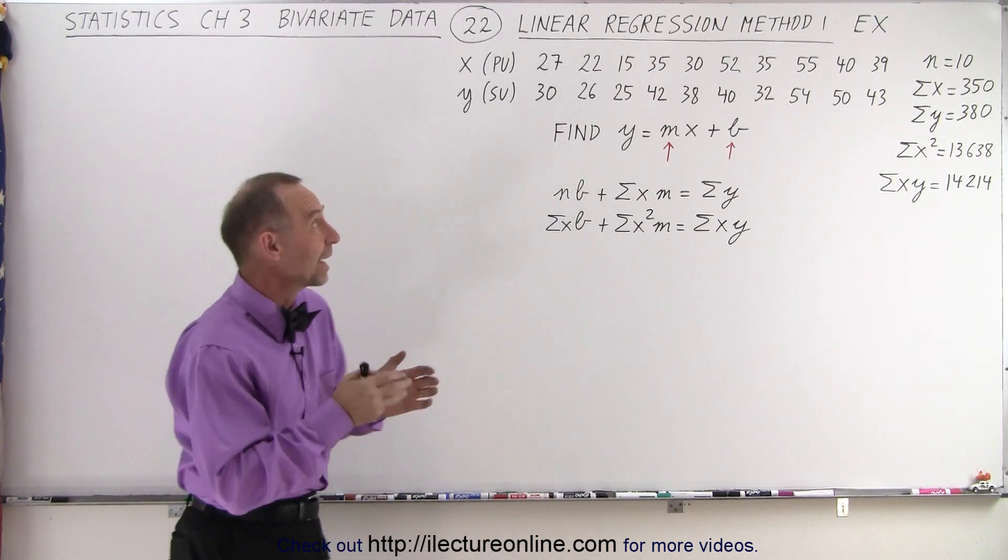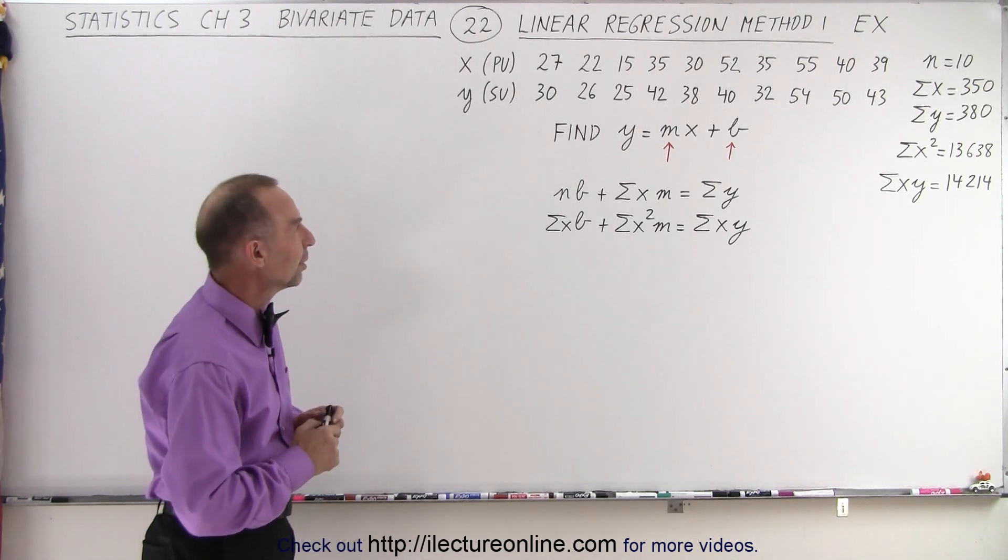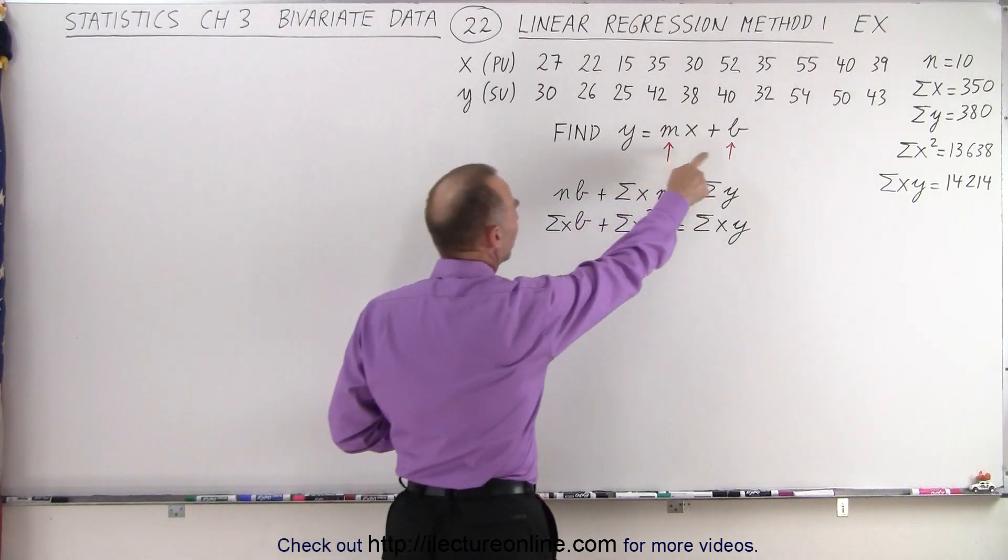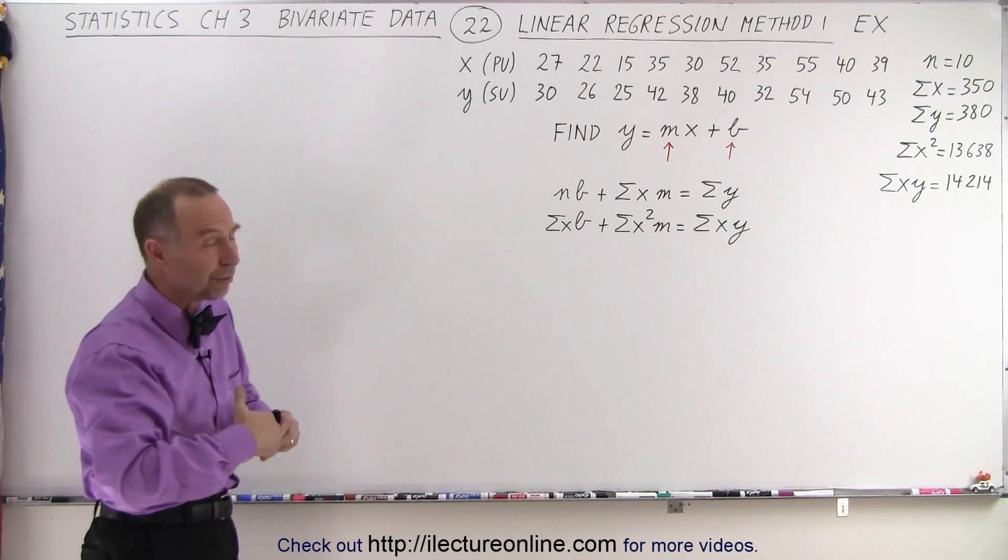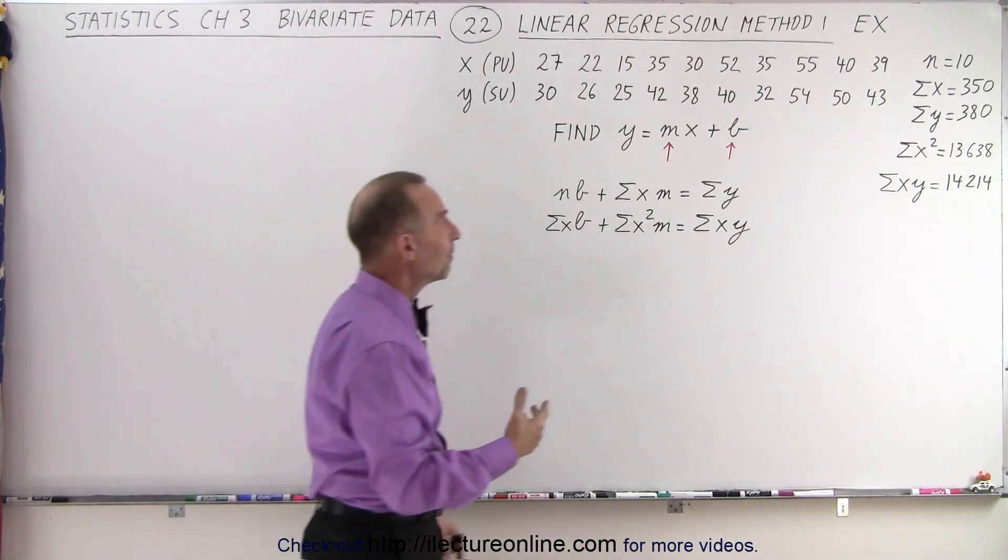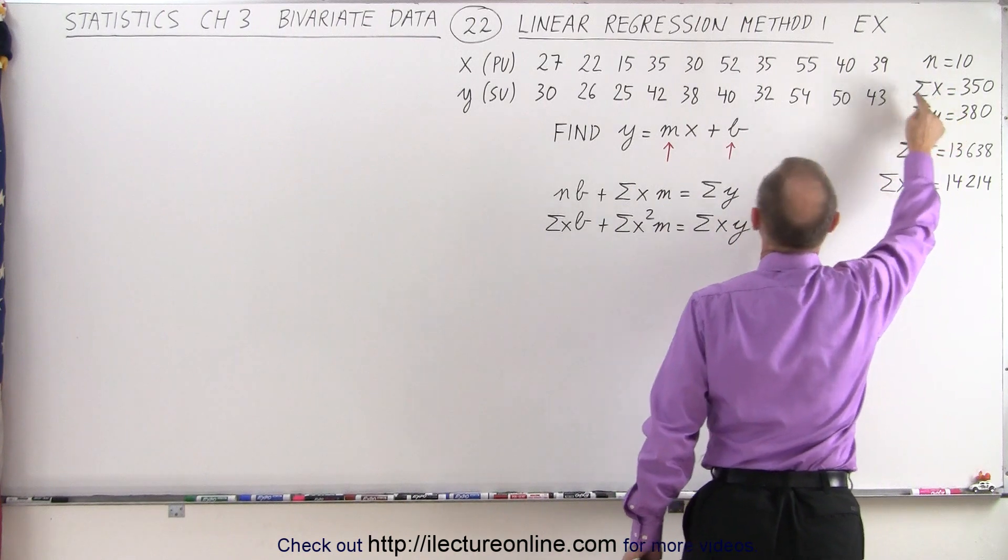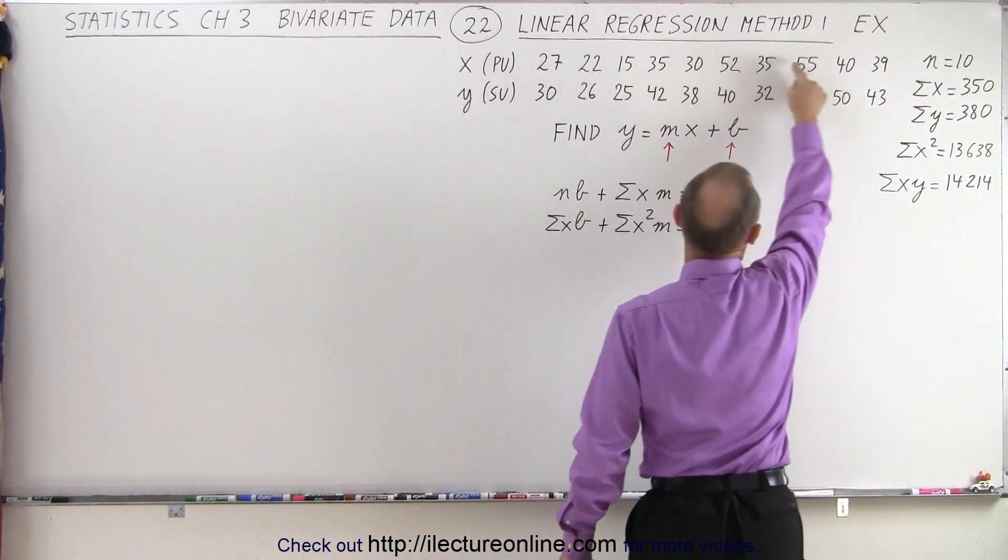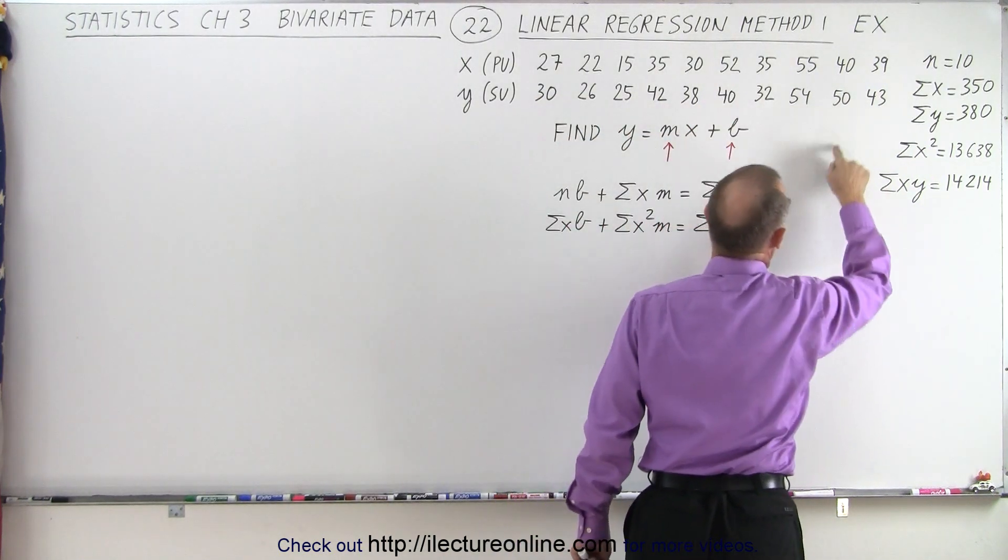So here we go back to our sit-ups and push-ups, and finding a linear relationship between them via the equation y equals mx plus b. We're going to use method 1 to do so, and we've already pre-prepared ourselves by finding the number of data points, which is equal to 10, the sum of all the x values, which is the sum of the first row, the sum of all the y values, which is the second row.